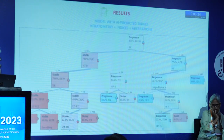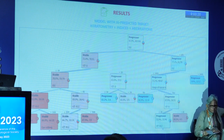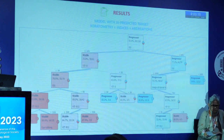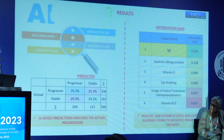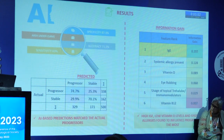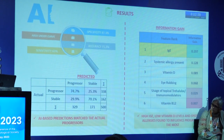Our model used a branching decision tree pattern and took a number of parameters including vitamin D, IgE, and others, giving us data with which we could stratify these risk factors. We found that IgE was the highest risk factor, indicating that most of our progressors had a high level of IgE. The second most significant factor was systemic allergy, followed by others.